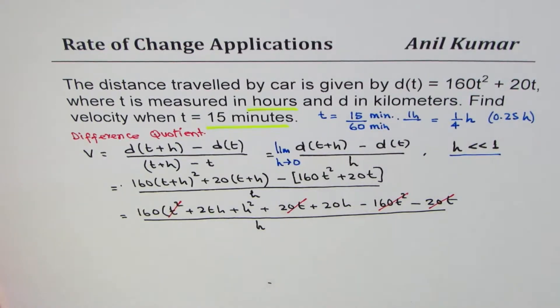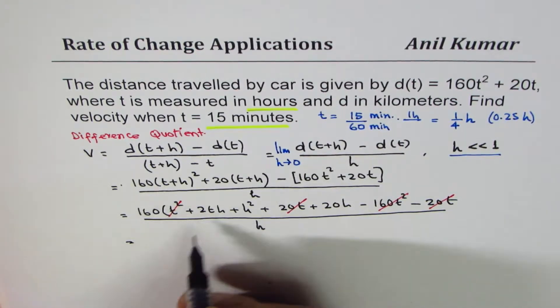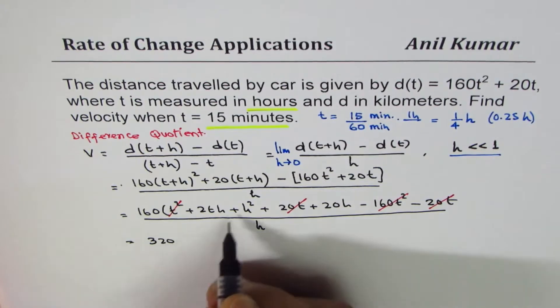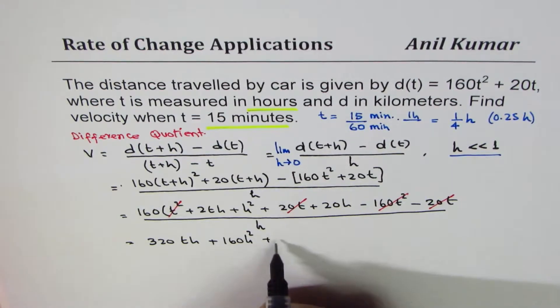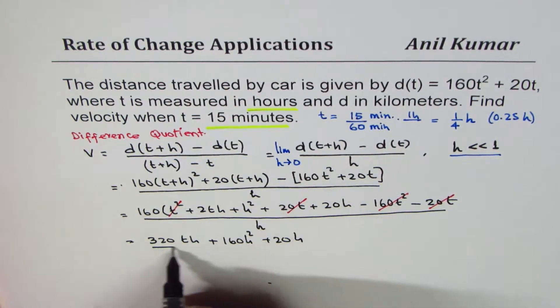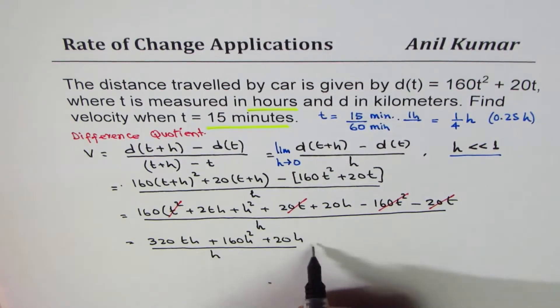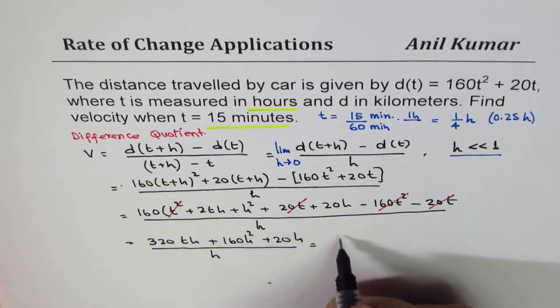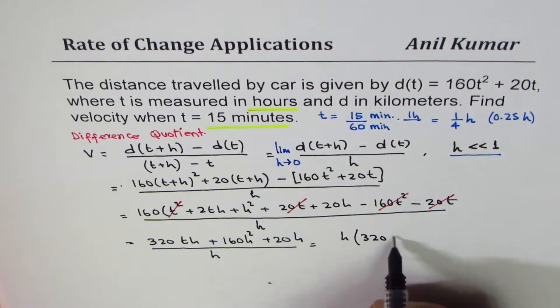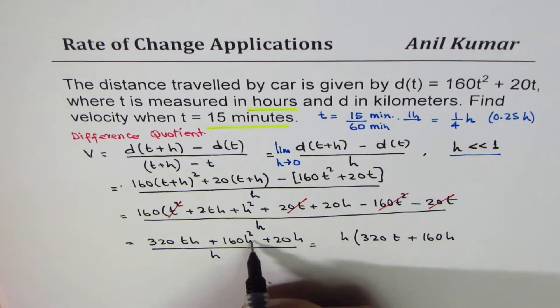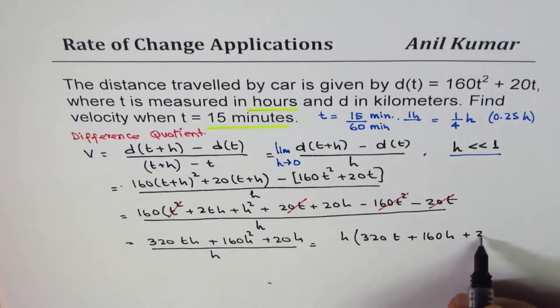So this times this and 20t with 20t correct. So you are left with, let me open the bracket now, 320th + 160h² + 20h over h. So we can take h common so we get h times 320t + 160h + 20.